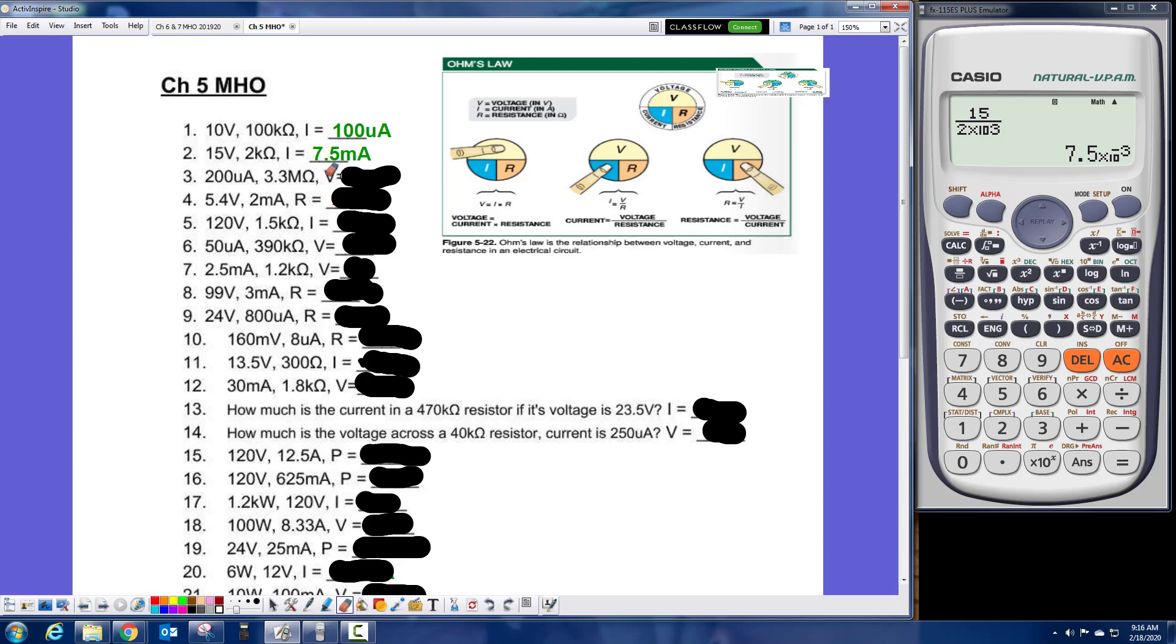Alright, the next one, I'm looking for voltage. So if I cover up the V, it's I times R. So V is equal to the I of 200 times 10 to the negative 6 times an R of 3.3 times 10 to the sixth. And that's 660 volts.